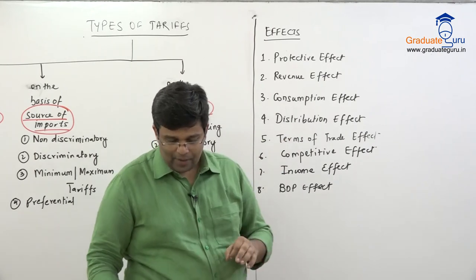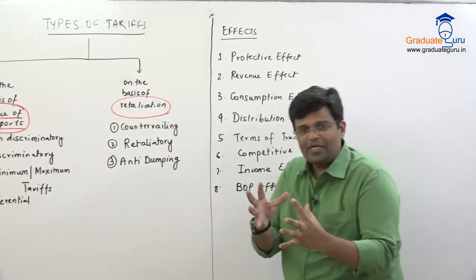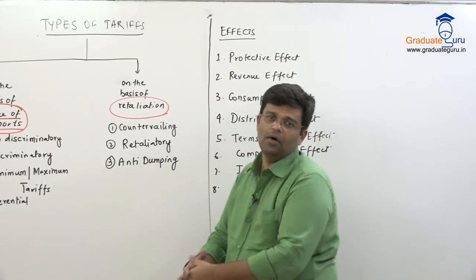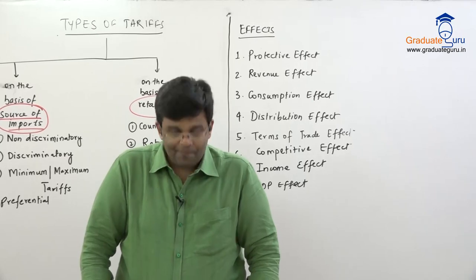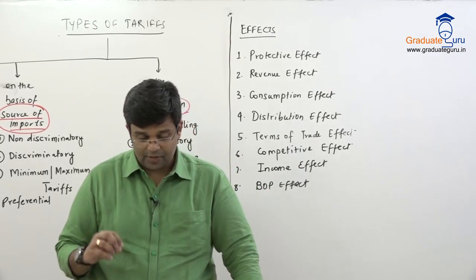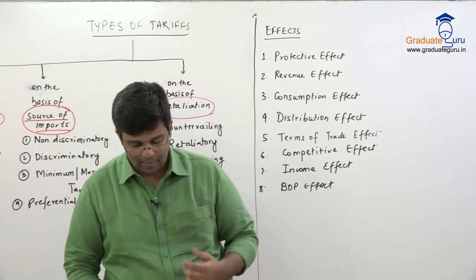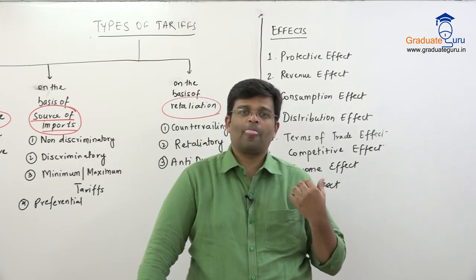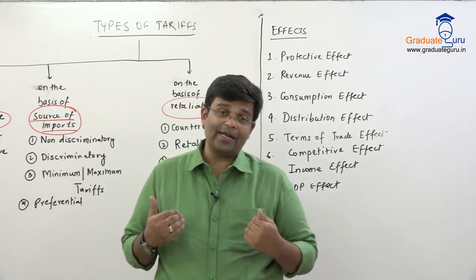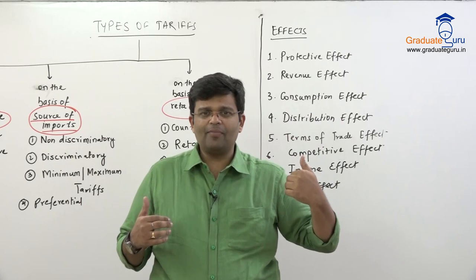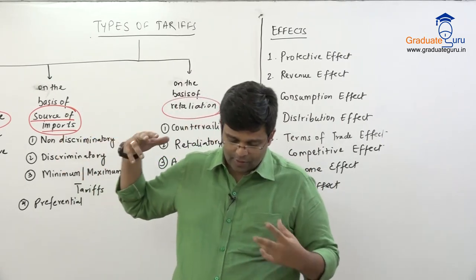Fourth is the distribution or redistribution effect. The favor shifts from consumers to producers — consumer surplus transfers to producer surplus. Producers experience increased producer surplus as a result of tariffs. Earlier, producers earned less due to competition from cheaper imports, but now that imports have become costlier, producers are encouraged to produce and sell more, so their surplus automatically increases.